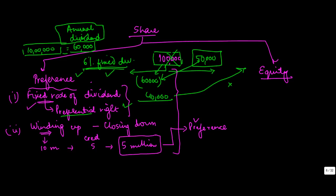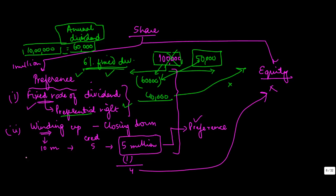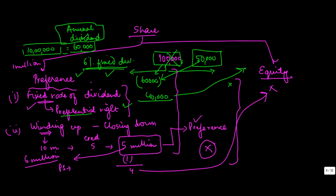Out of this 5 million, the order of payment is: first, preference shareholders are paid. They have a preferential right to get their money back over equity shareholders. If the preference shares were worth 1 million, they get their full 1 million back and the remaining 4 million goes to equity shareholders. But if the remaining amount was only 6 million total after liabilities, the entire amount would go to preference shareholders and equity shareholders would get nothing.